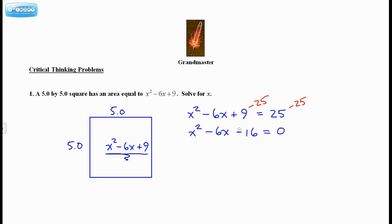So to factor the left, I need two numbers that multiply to negative 16, but add to give me negative 6. For that, I need negative 8 and positive 2. So this gives me x minus 8 times x plus 2, but that, of course, is still equal to 0.